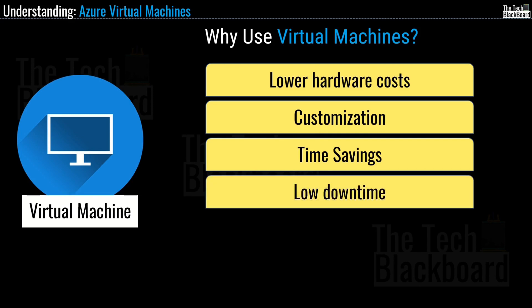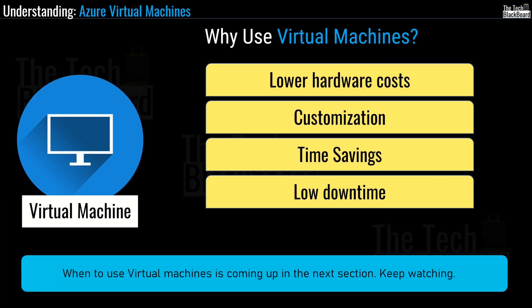Number four is low downtime. With virtual machines, if the host goes down unexpectedly, you just move your virtual machine from one hypervisor to another on a different machine. Virtual machines are very portable and they are a great solution for creating backups.